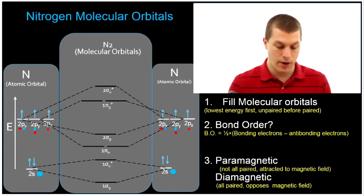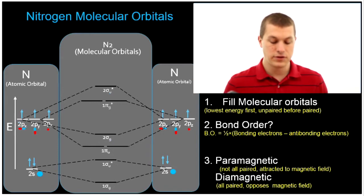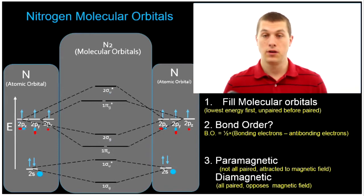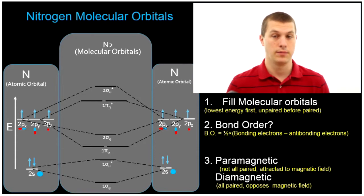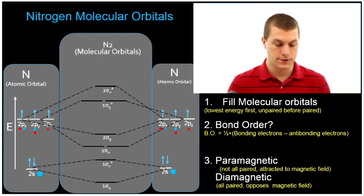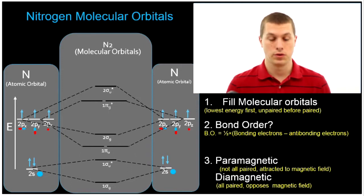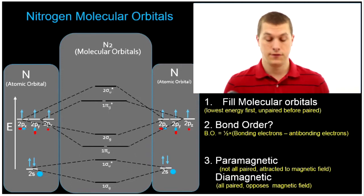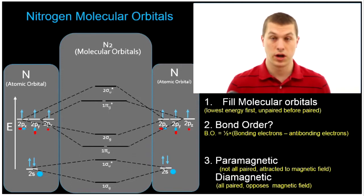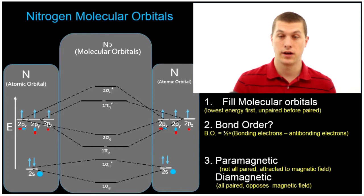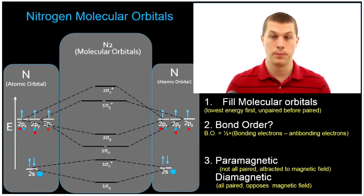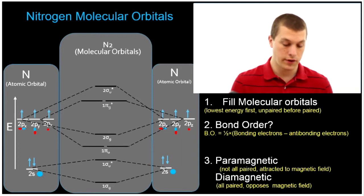Once you have this order down, all you have to do is fill up these molecular orbital diagrams with the correct number of electrons. We're going to follow the same rules you followed for filling up atomic orbitals: fill the lowest energy first, put in unpaired electrons before we pair them, and build up slowly until we put in all of our electrons.